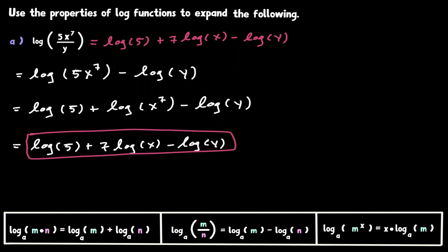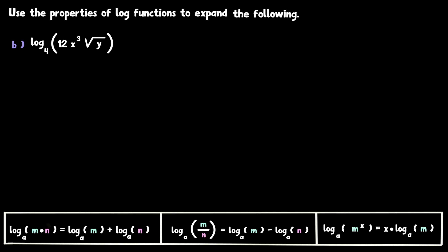Now let's take a look at our second example. If we want to expand, let's ask ourselves what is going on inside the log. There is no division this time — we just have three multiplications. We have 12, multiplied by x to the third, and then multiplied by the square root of y. Before we move any further, we have to rewrite the square root of y. Anytime we encounter square roots inside the log, it's preferable to write it as an exponent. The square root of y can be represented as y raised to the one half.